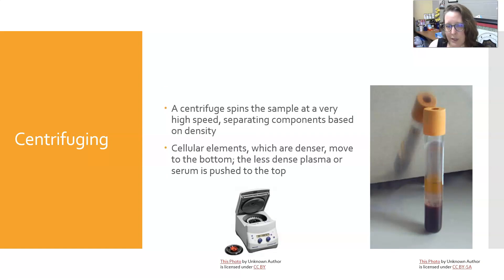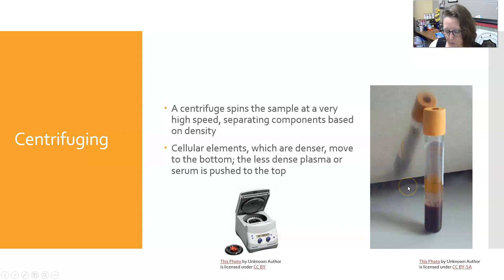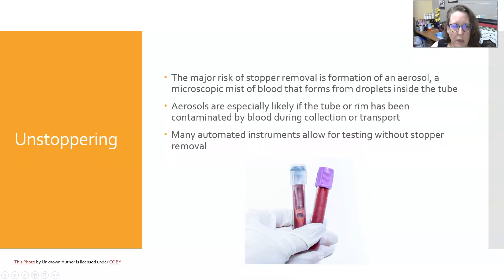A centrifuge spins the sample at very high speed and separates components based on density. The cellular elements, which are denser, move to the bottom, and the less dense plasma or serum is pushed to the top. If you have a serum separator, it will lodge itself in between the cells and the liquid portion — the plasma or serum.